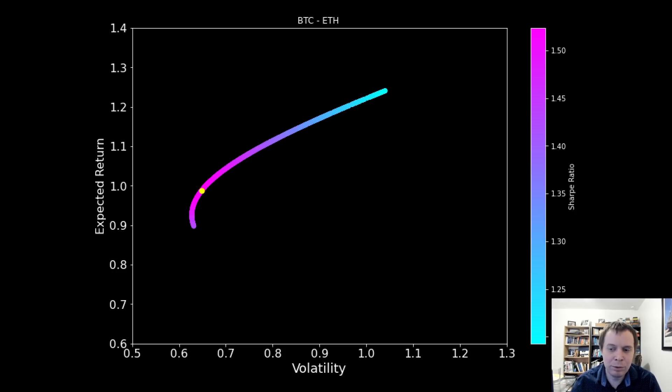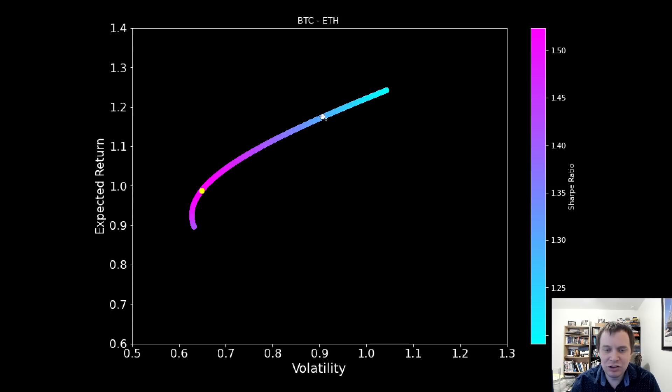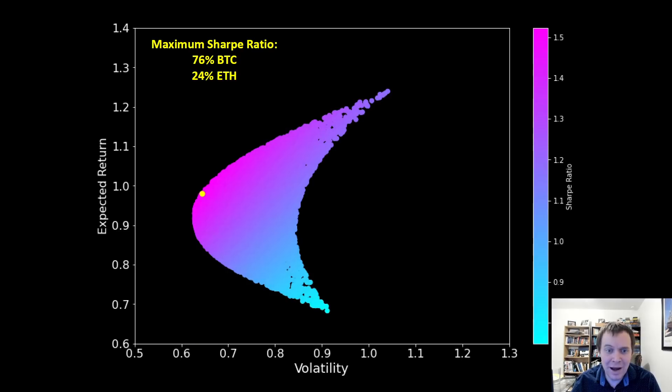Suppose that you have a portfolio that just consists of Bitcoin and Ethereum. Rather than getting a nice filled-in curve like we saw before, you just get a single line. The portfolio which maximizes your Sharpe ratio based on just Bitcoin and Ethereum, based on historical volatility since 2015, is 76% Bitcoin, 24% Ethereum.